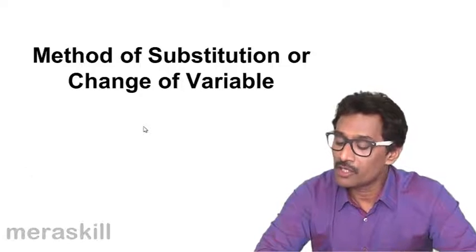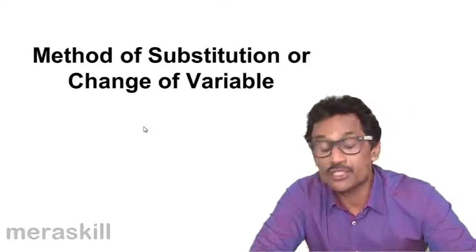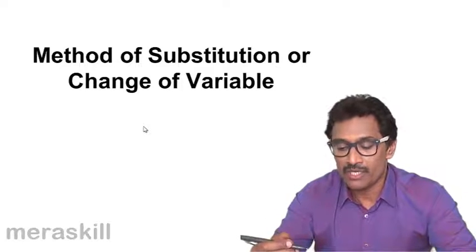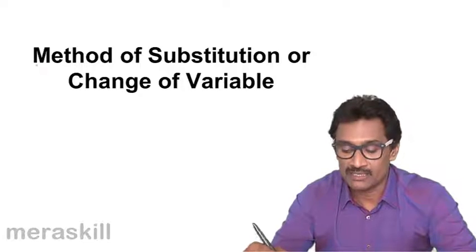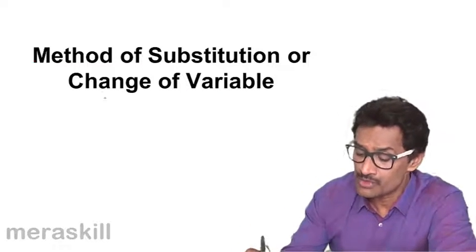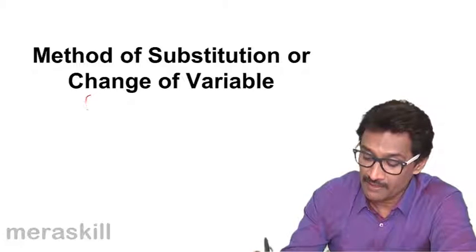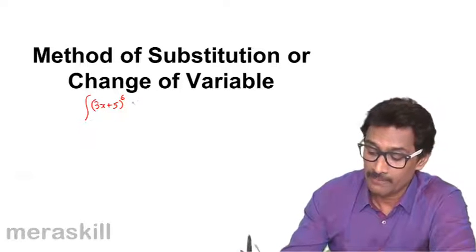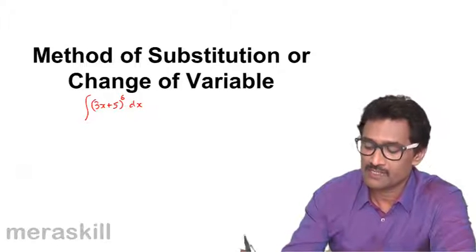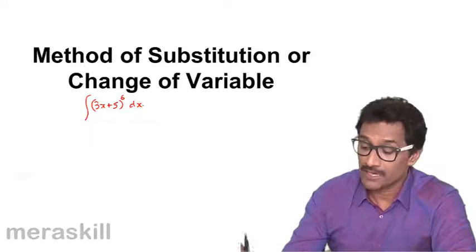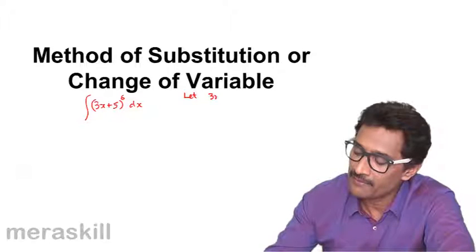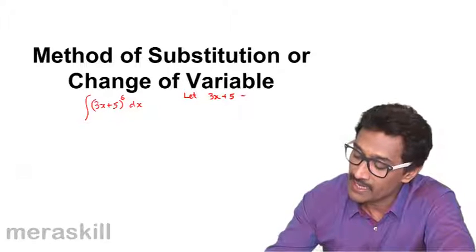Now we have the concept of method of substitution, or change of variable. Here we shall be changing the variable sometimes. Suppose I want to find the value of (3x + 5)^6. The standard way of doing it is straightforward, but another way is we can let 3x + 5 be equal to say m.